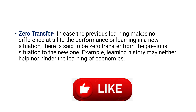Zero transfer: in cases where the previous learning makes no difference at all to the performance or learning in a new situation, that is called zero transfer. For example, learning history may neither help nor hinder the learning of economics. Learning history and learning economics are two different extremes — history learning has no connection with economics learning, so it neither promotes nor hinders economics learning. This type of transfer is called zero transfer.